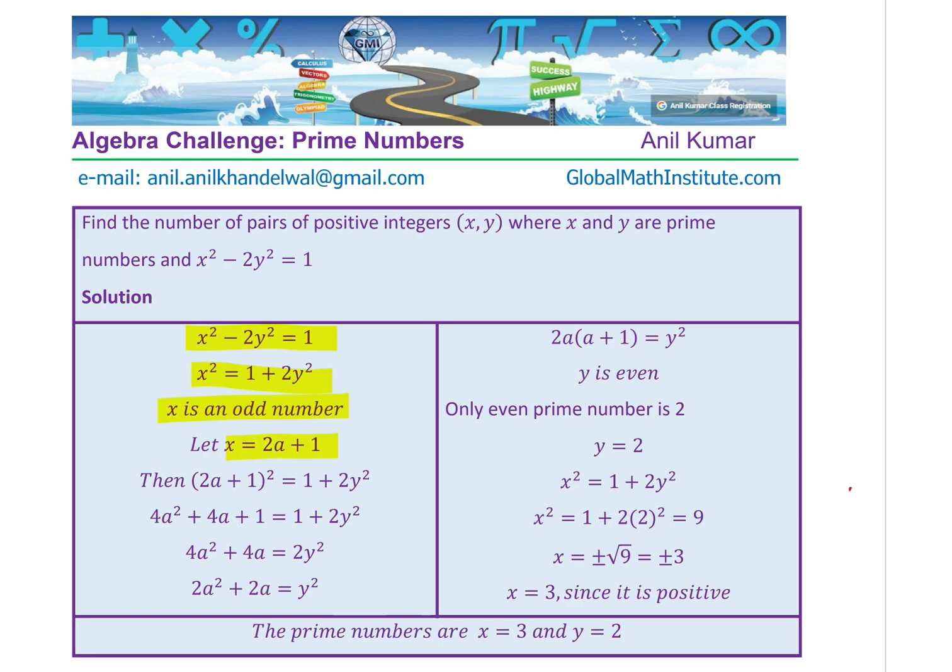Since x is odd, I am substituting x as 2a + 1. If I substitute 2a + 1 in the equation x² = 1 + 2y², I get (2a + 1)² = 1 + 2y². Expanding using a² + 2ab + b², I get 4a² + 4a + 1 on the left-hand side, and 1 + 2y² on the right-hand side.